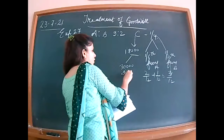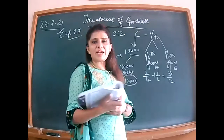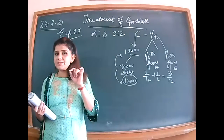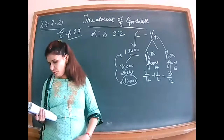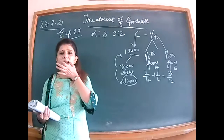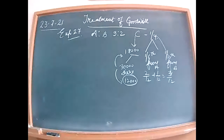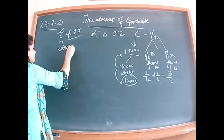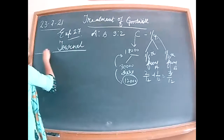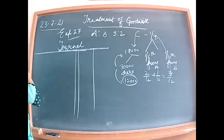Out of the 30,000 share of goodwill, C is bringing only 18,000 in cash. The rest — 12,000 — C is not in a position to bring in cash. It was decided that the shortfall shall be debited to C's current account.